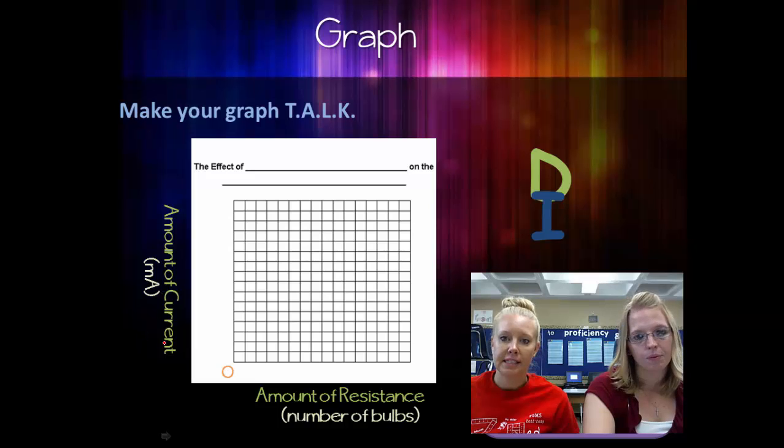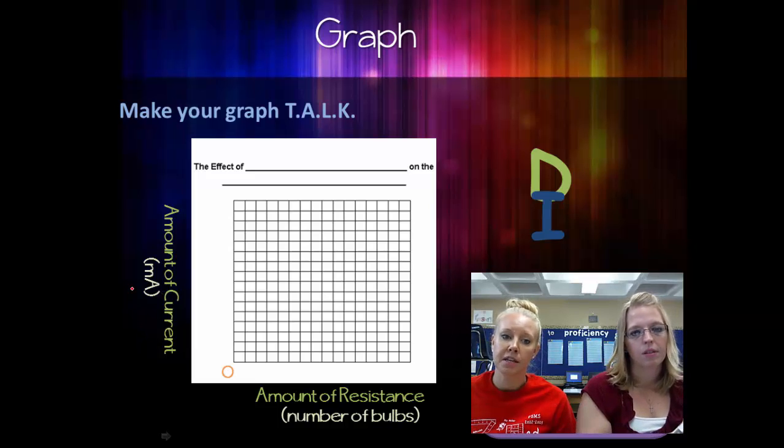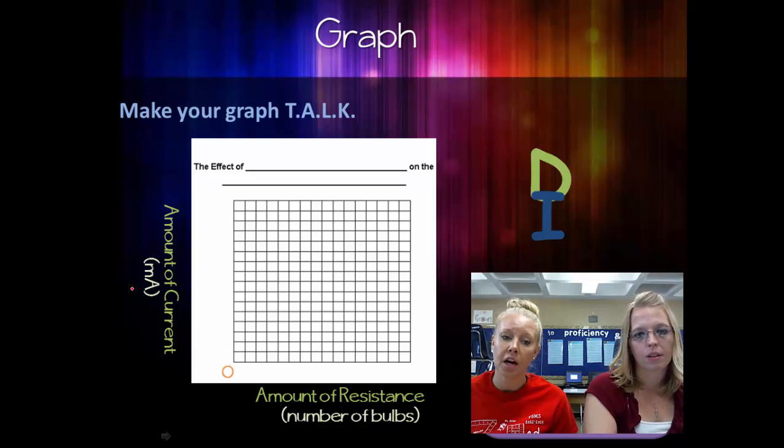The amount of current is our DV. And then our unit is milliampere. And the abbreviation for milliampere is a small m, capital A. Yep.